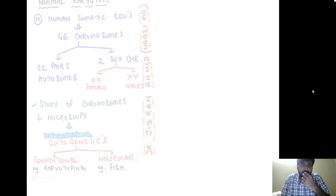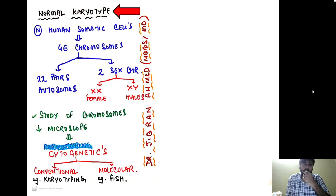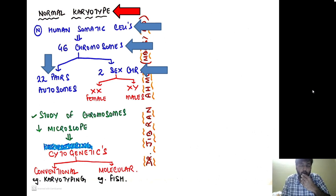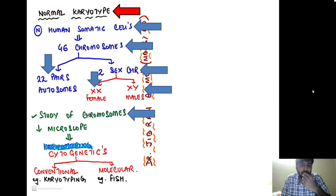Before we go into chromosomal disorders, let us first understand normal karyotyping. Normal human somatic cells comprise 46 chromosomes in total, which can be broken down into 22 pairs of autosomes and two sex chromosomes. In females it is XX and in males it is XY, so 44 autosomes plus two sex chromosomes. Karyotyping is the study of chromosomes under the microscope, and this study is called cytogenetics.